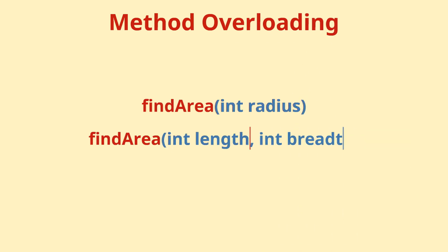In method overloading, we can have multiple methods with the same name. Like, to find area, based upon number of parameters, the function can work for different shapes.